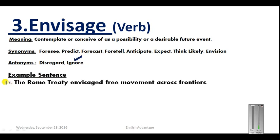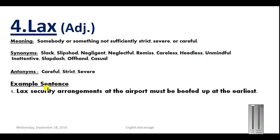Example sentence for envisage: 'The Rome Treaty envisaged free movement across frontiers' — meaning the Rome Treaty anticipated free movement across different borders and frontiers.